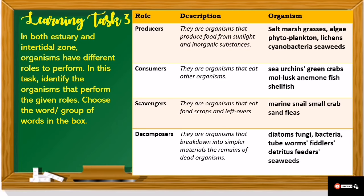For learning task number 3: in both estuary and intertidal zone, organisms have different roles to perform. You will identify the organisms that perform the given roles. For producers — organisms that produce food from sunlight and inorganic substances — examples are salt marsh grasses, algae, phytoplankton, lichens, cyanobacteria, and seaweeds.